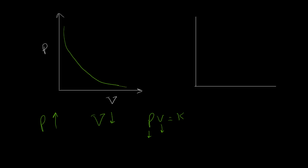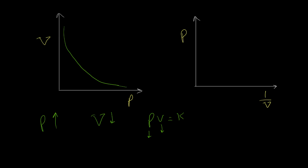The diagram is not linear — it is a curve. We may also have volume on the y-axis and pressure on the x-axis; the shape is the same curve. However, if we plot pressure versus one-over-volume, we get a linear graph. Similarly, volume versus one-over-pressure also gives a linear graph. Now let's look at some examples.